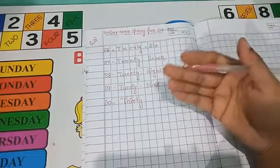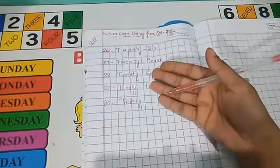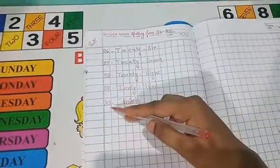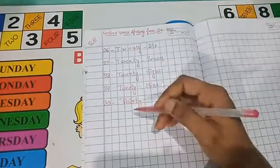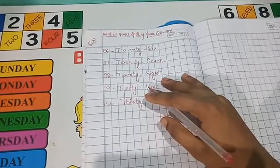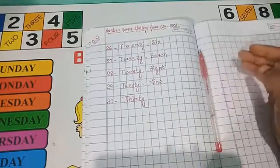And you will note it down in your math copy from number 26 to 30, these are number names spelling. Okay students, okay, bye.